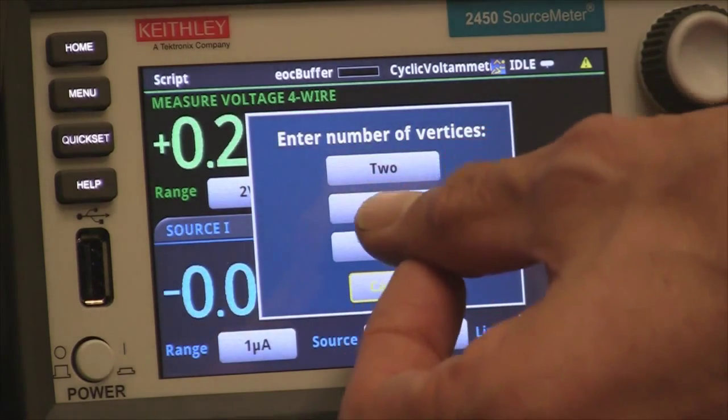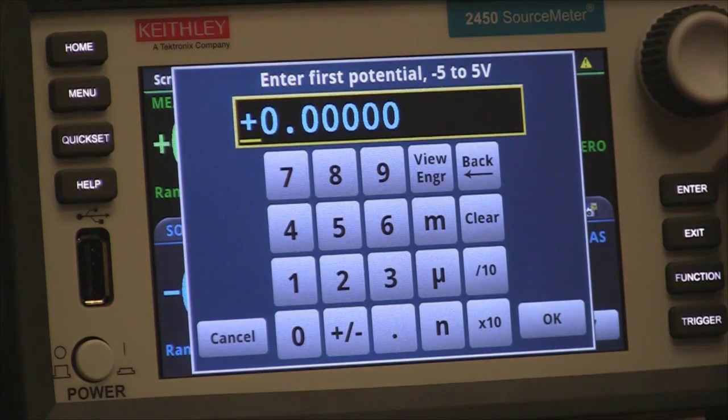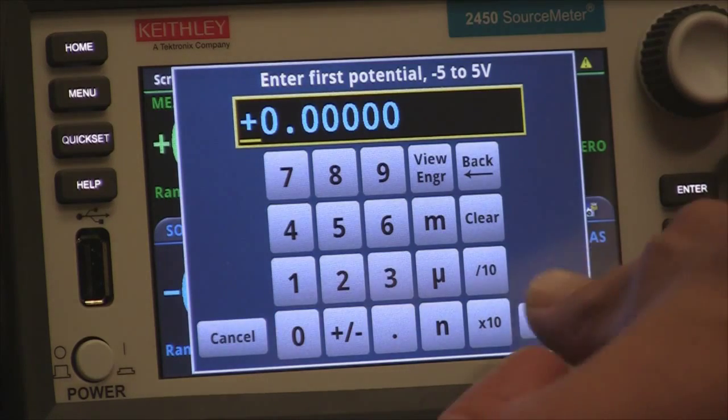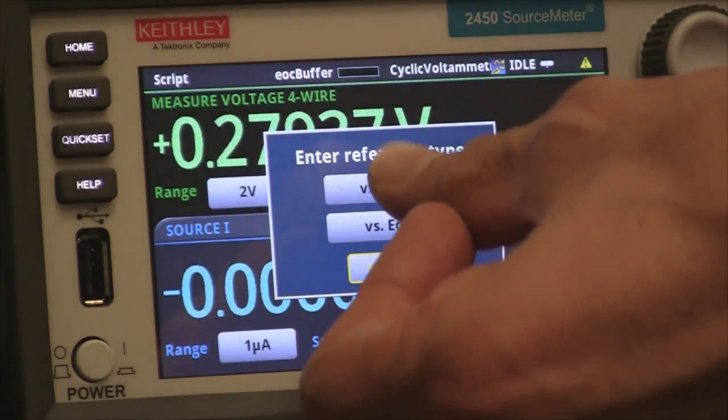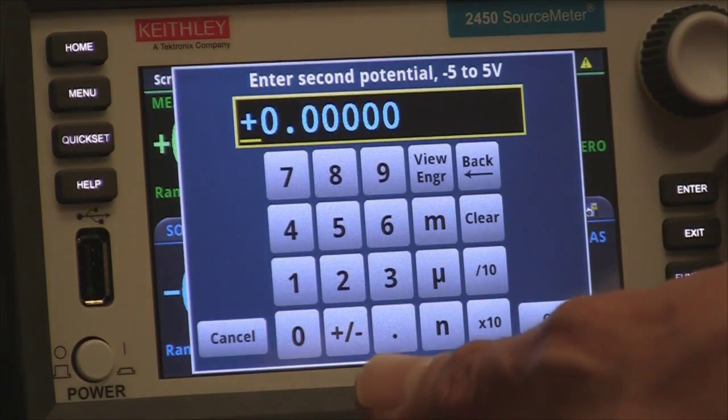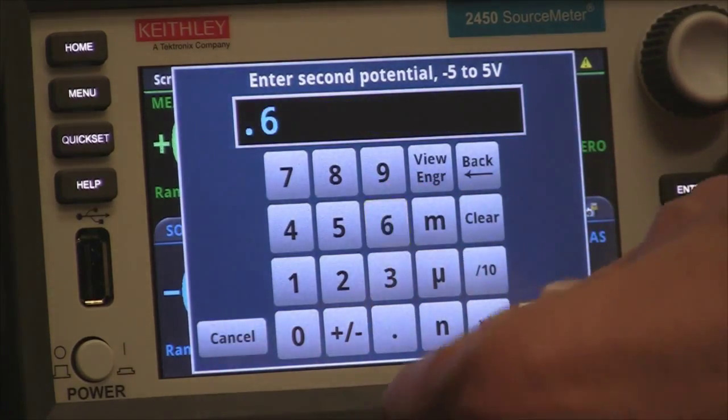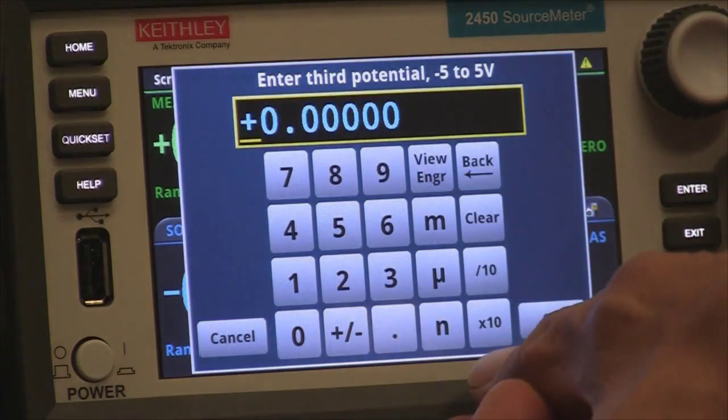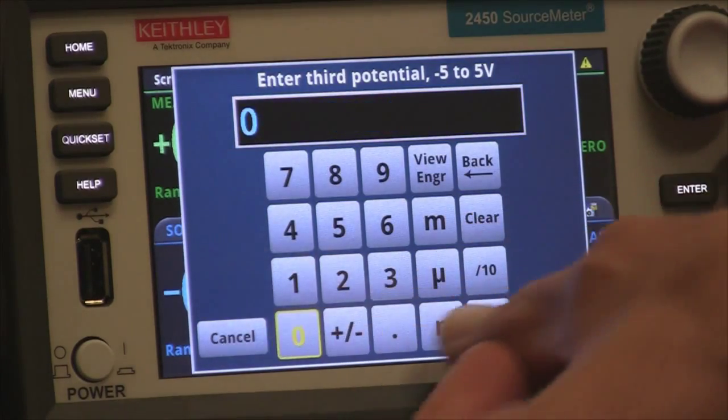The number of vertices that we want here is 3. The first potential we're going to select 0 versus the reference. For the second potential we're going to select 0.6 for this chemistry, again versus the reference. And the third potential we're going to go back to 0.